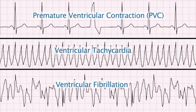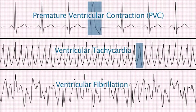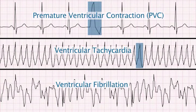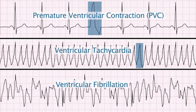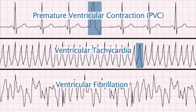Characteristics of ventricular rhythms are: the QRS complexes are wide and long in duration. The QRS complexes and T waves often point in the opposite direction of the normal rhythm QRS complexes. And the QRS complexes are randomly related to P waves.